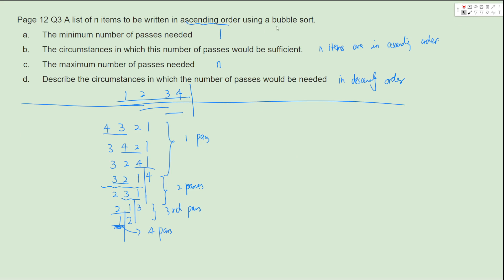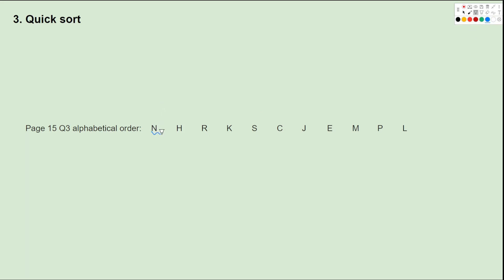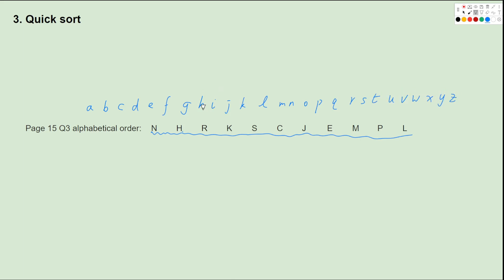Let's try another example from question 3, using bubble sort to sort items in alphabetical order. Comparing N and H: H should come before N alphabetically, so we swap — now we have H, N. Then N and R are already in correct order. Then R and K need swapping — giving H, N, K, R, S, C, J, E, M, P, L. Then R and S are correct. S and C need swapping.